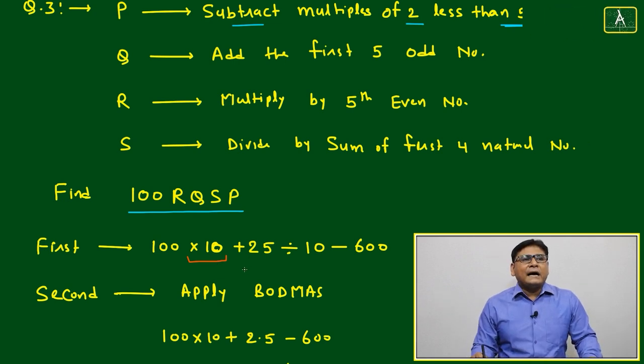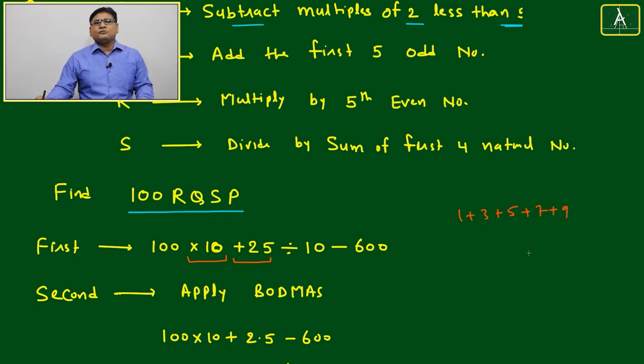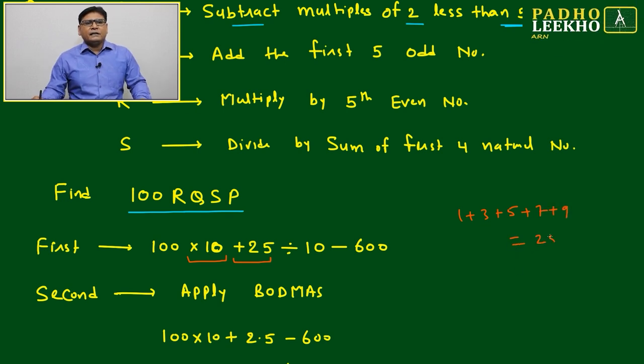Next is Q. Add the first five odd numbers. Add first five odd numbers: 1 plus 3 plus 5 plus 7 plus 9. This is your first five odd numbers. That is 25.